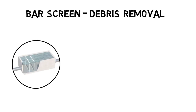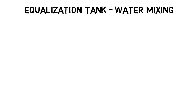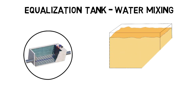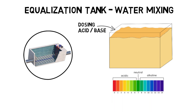The purpose of the bar screens is to hold back gritty material that could cause damage in following treatment processes. Next, in the equalization tank, water is mixed and the pH value is neutralized by dosing of acid or base. This is important as bacteria for biological treatment can only survive at a pH value around 7.